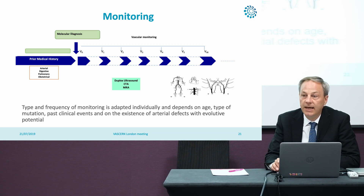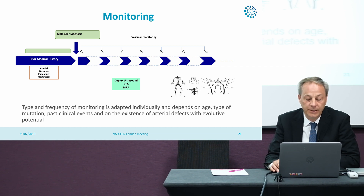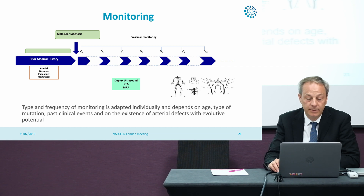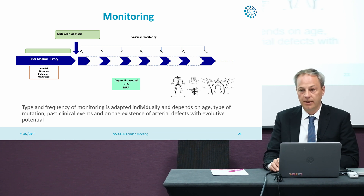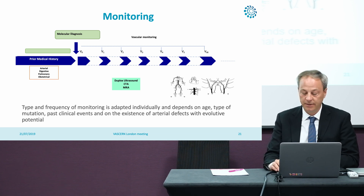Of course, a clinically silent patient does not have the same monitoring needs as a patient that has had a recent arterial complication. Also, a patient with evolving arterial defects does not have the same needs as a teenage young patient without any arterial complication. All these points have to be taken into consideration. A 1.5-year monitoring interval may be the most standard starting point for vascular monitoring, to be adapted according to all these variables.